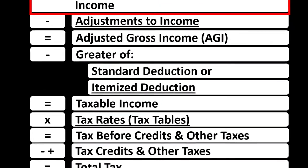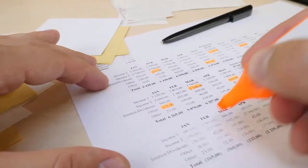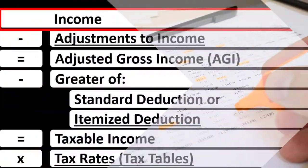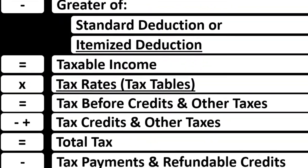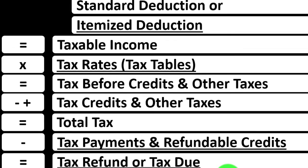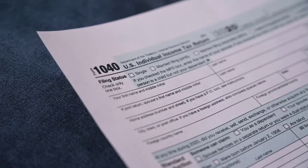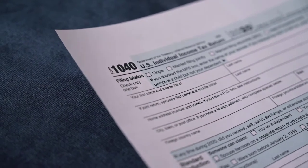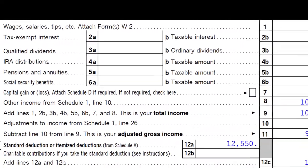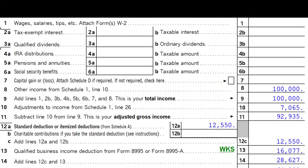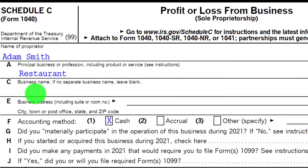Looking at the income tax formula, line one is income. We have a sub-schedule — basically an income statement with income and expenses — and we're focusing on the expenses side. Expenses are essentially deductions. The net figure rolls into line one income of the income tax formula and page one of Form 1040, starting from the bottom line of Schedule C, rolling into Schedule 1, then into Form 1040 line eight.